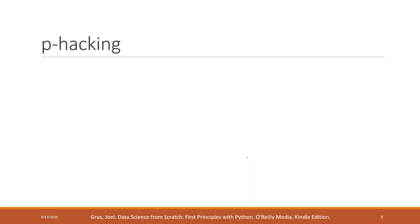We talk about p-values a lot, especially when publishing scientific papers. If you want to prove your result is significant — for example, that COVID-19 vaccines are effective — you compare people who got the vaccine against those without vaccines, and you want a very small p-value to show the difference is significant. However, we should be careful about p-values because you can actually manipulate them, which is called p-hacking.